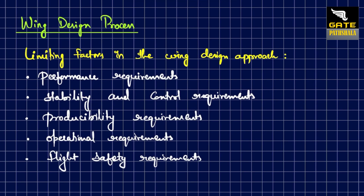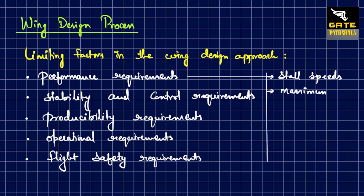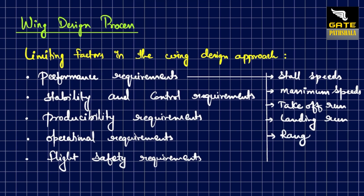Major performance requirements include a lot of interesting things related to aerodynamics and aircraft performance. Specifically, they include the stall speeds, maximum speed of the aircraft, what is the takeoff run, what is the landing run, and for what range the aircraft must be operating.